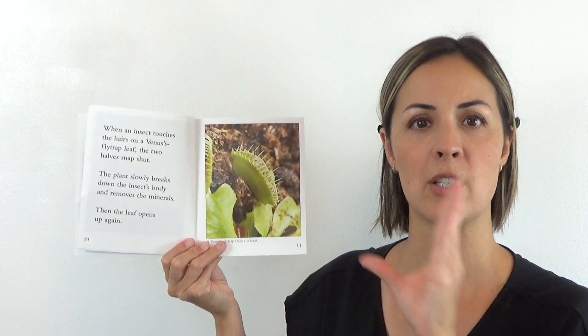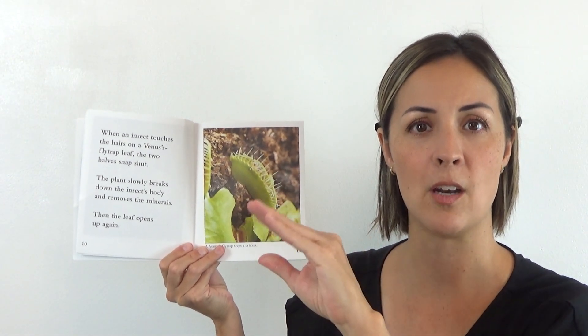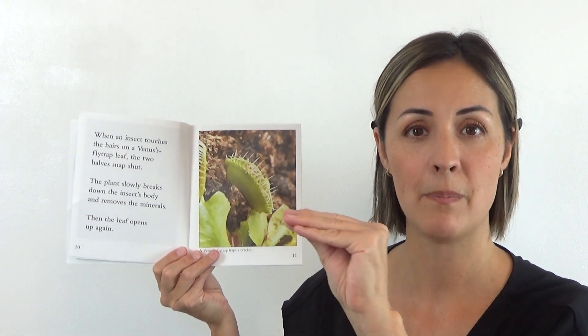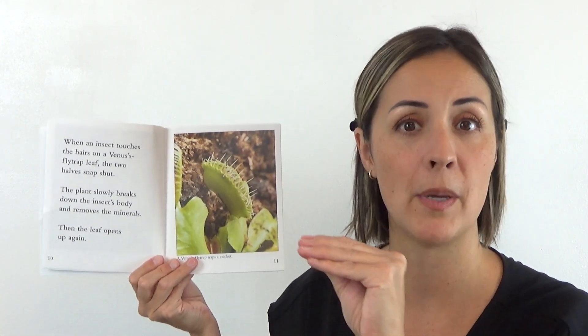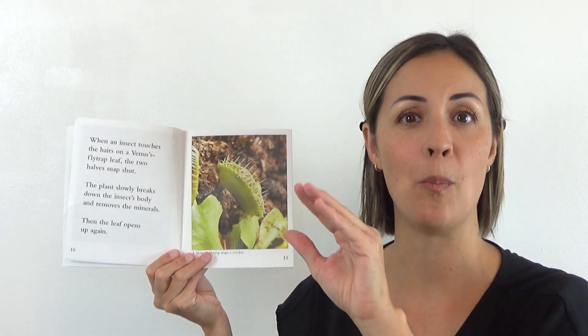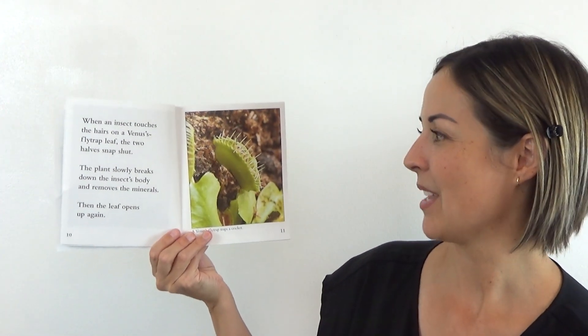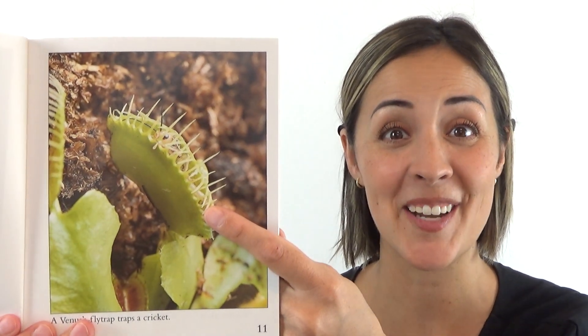So can you pretend, take your hand, pretend you're snapping shut around an insect. You're going to eat that insect and then open back up again. Okay, ready? We're going to snap, eat, eat, eat, eat, get all the nutrients, all the minerals and open back up. We're ready for another meal. Good. This Venus flytrap has caught a cricket. There's a cricket in there. Oh my goodness.